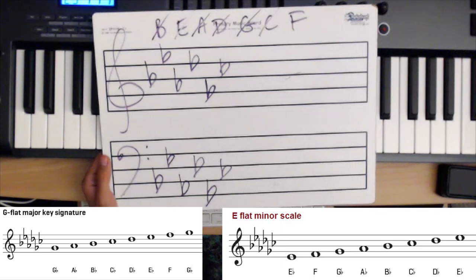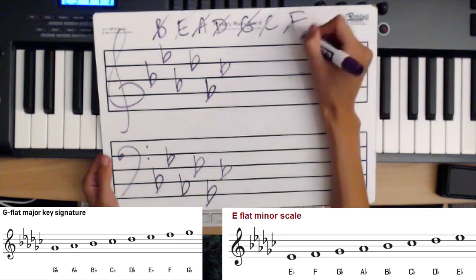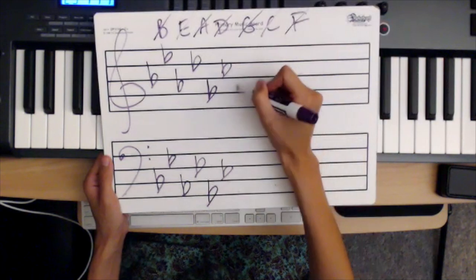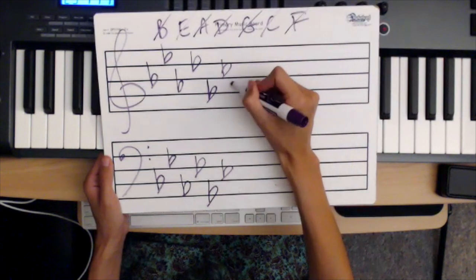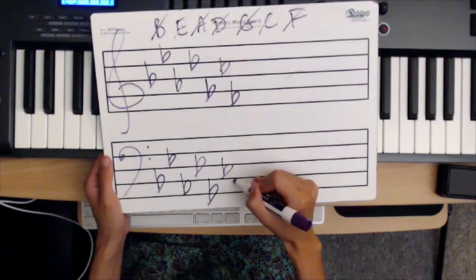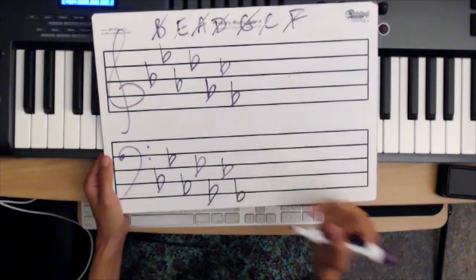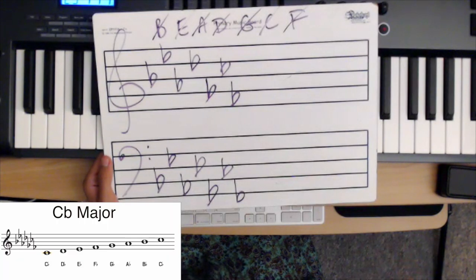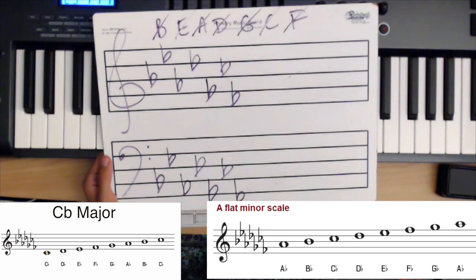Finally, the scale that has seven flats adds F flat — going down a fifth. The scale with seven flats is C flat major, and the relative minor is A flat minor.